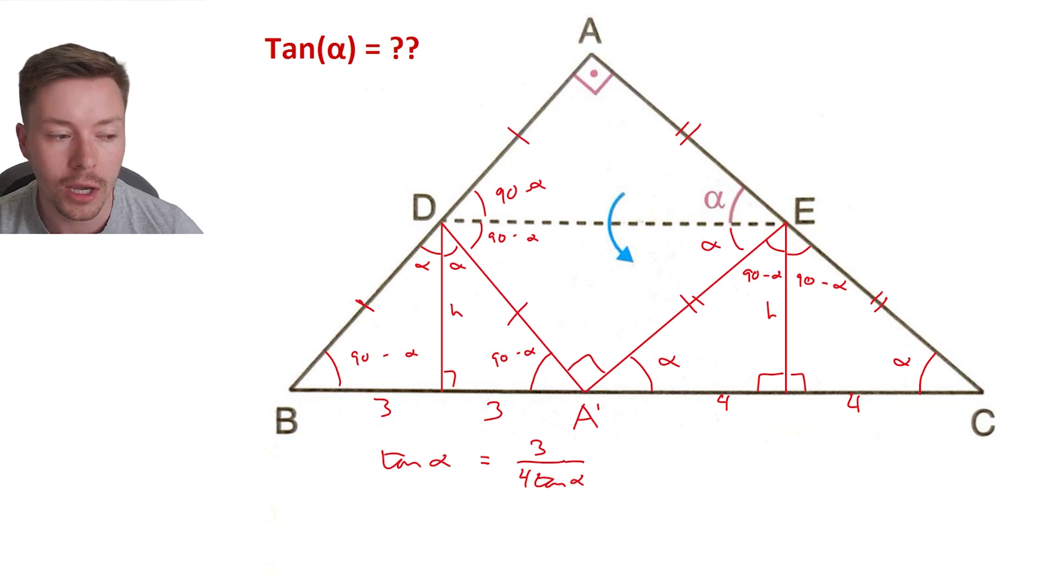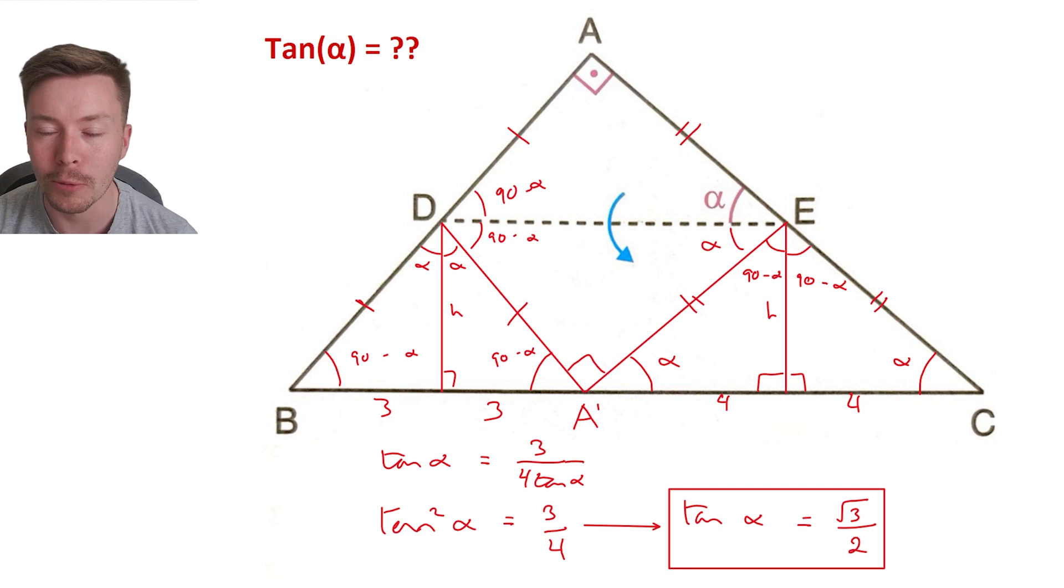So let's substitute that back in and we're going to get tan alpha is equal to three over four tan alpha, which was our value for H. We're going to rearrange that and we're going to get tan squared alpha is three over four or three quarters. And then finally we're going to square root that and we're going to get square root of three over the square root of four, which is two.